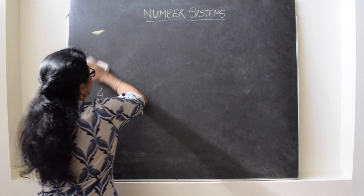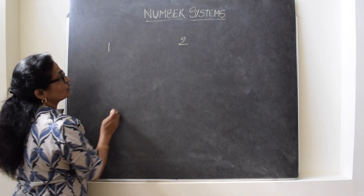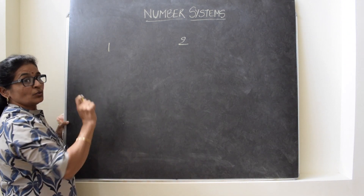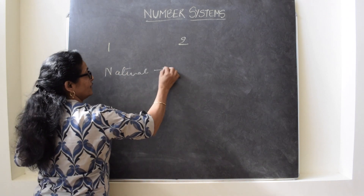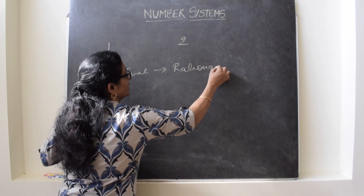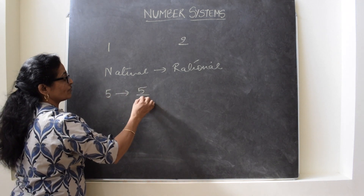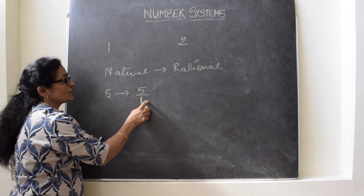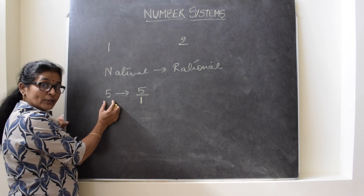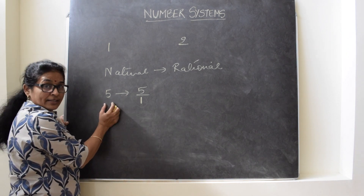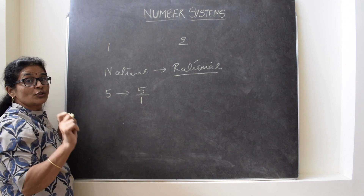Let us see how. Take two numbers, one and two. Now the question is whether one and two are rational or not. Every natural number is a rational number because it fulfills the definition of rational number. For example, 5 can be written as 5 upon 1 — we can introduce the 1 from our side and it does not change the value. So every natural number, every integer, every whole number is also a rational number. But the converse is not true always.